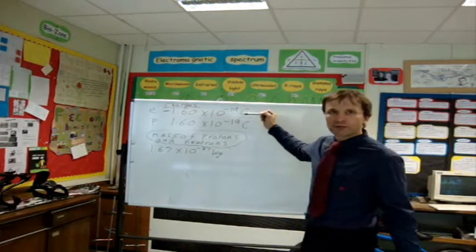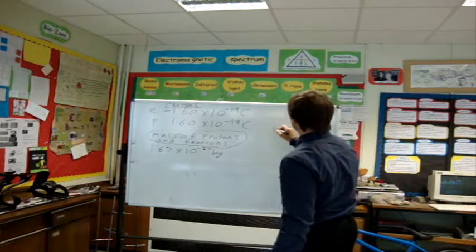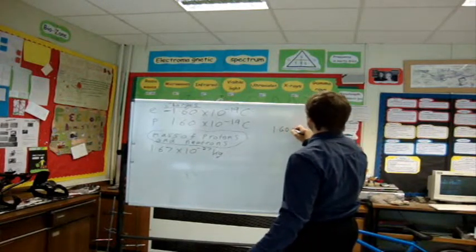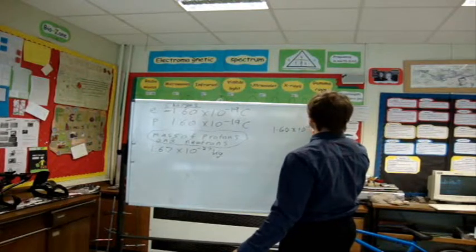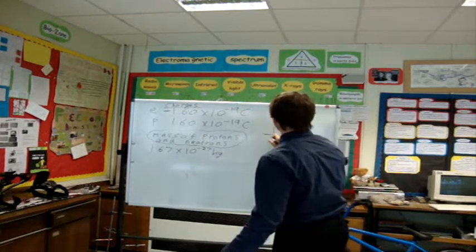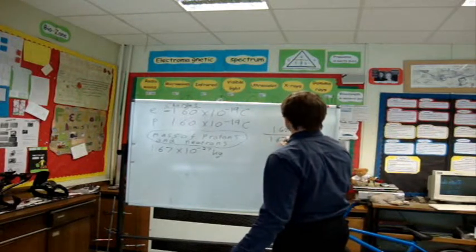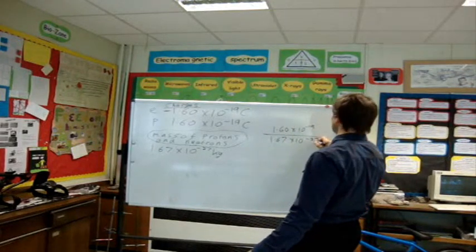if we just work it out for the proton, first of all. Now, so the proton charge is 1.60 times 10 to the minus 19, and we're going to divide that by the mass of the proton. So, the mass of the proton is 1.67 times 10 to the minus 27.